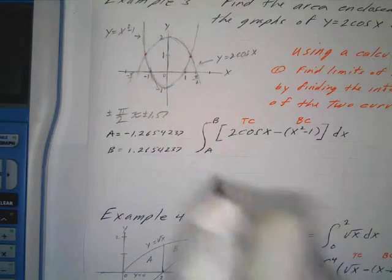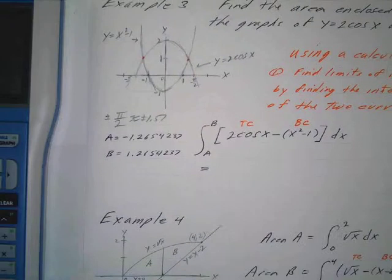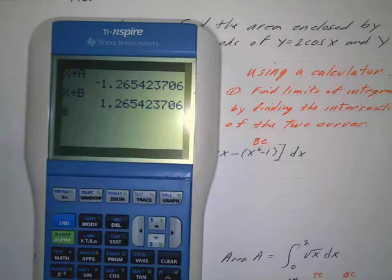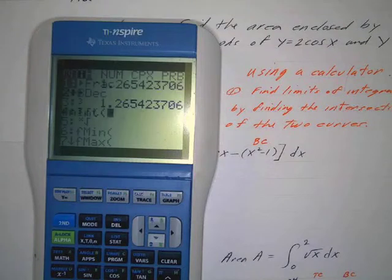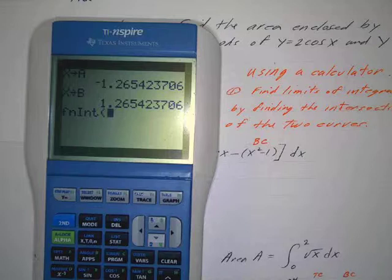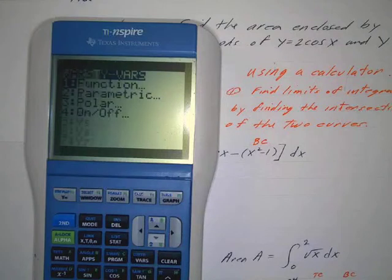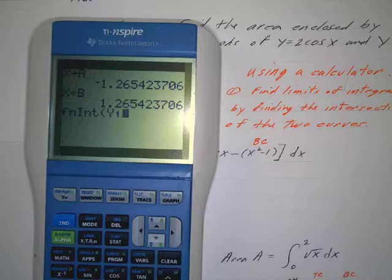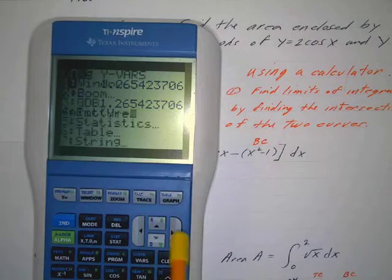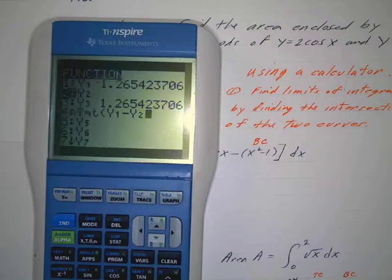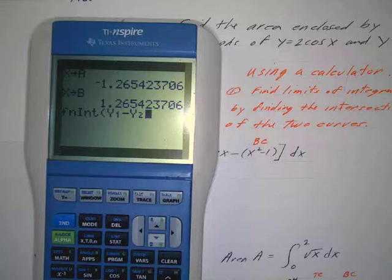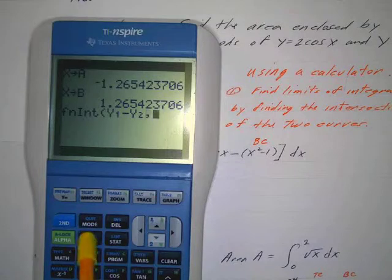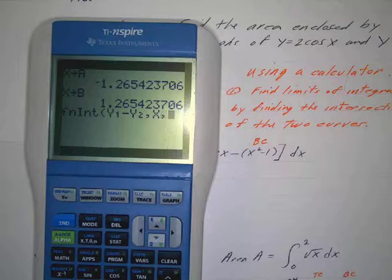So once you have that, we'll go to math nine, f and i and t. And then rather than put the functions in, we can just use var y bars, so go var y bars. And that's y1 - my top curve was y1 minus - so that's going to take the integral, the difference of those curves. That's what I want.